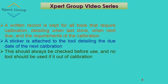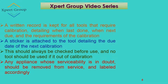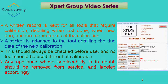Calibration status should always be checked before use, and no tool should be used if it is out of calibration. Any appliance whose serviceability is in doubt should be removed from service and labeled accordingly. A calibration sticker indicates the serviceability status of that equipment. For recording calibration records, we use different kinds of hard-copy papers and databases, where the data achieved during calibration is entered.